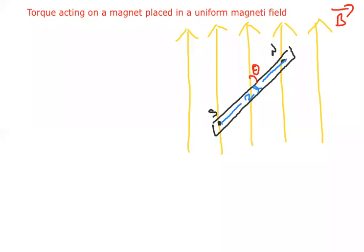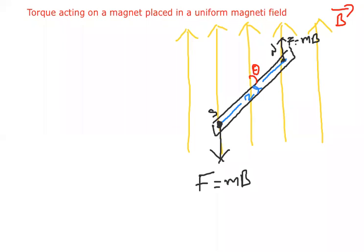Whenever a pole is placed in a magnetic field, the south pole will experience magnetic force opposite to the field direction. The north pole will experience magnetic force in the same direction as the field. The force F equals small m into B, where small m is pole strength and B is the magnetic field.